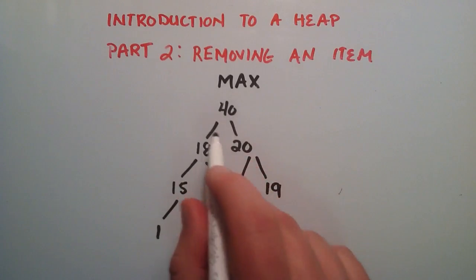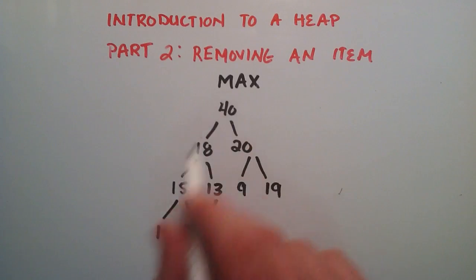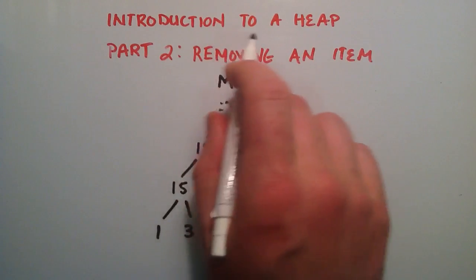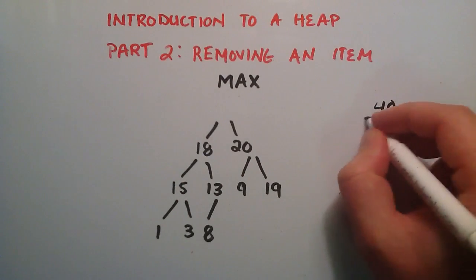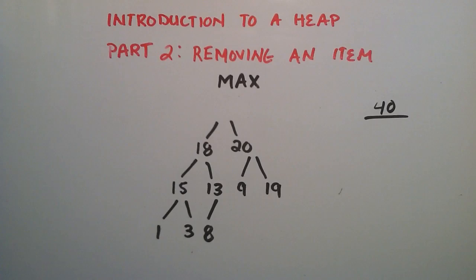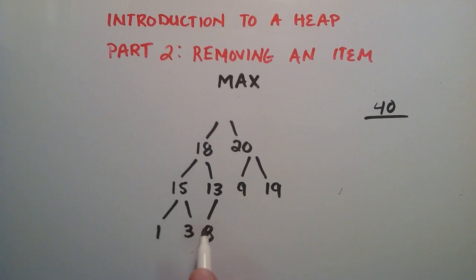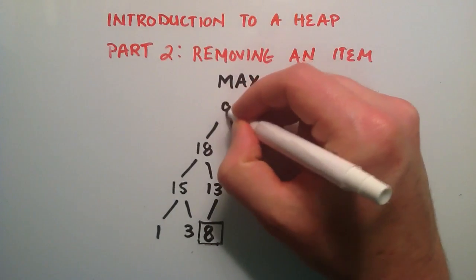So let's say that we go ahead and remove the 40 from our root here. And basically what we're going to do is we're just going to take that 40, and our program is just going to use it to do whatever it needs to. And then the next thing we need to do is we need to make sure that we keep the right structure for our heap. We need to make sure it's full from top to bottom, left to right. And so to keep that property we need to take this node right here, or this leaf, and move it up to the root.